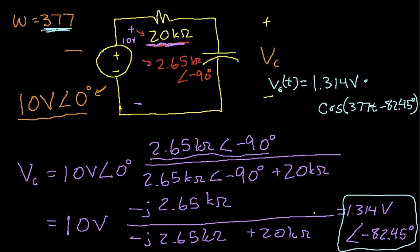Again, it's important that we make this last step, because even though the phasor essentially contains the same information as the time function, our goal usually is to have a time function. In this case, we know it's going to be a cosine with a shifted phase and an amplitude of 1.314 volts.